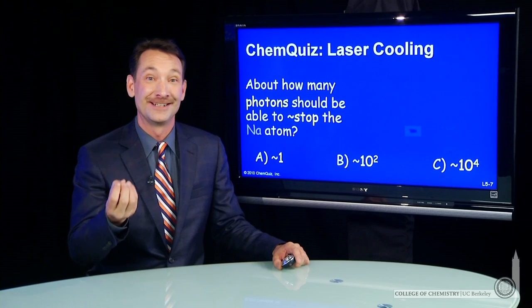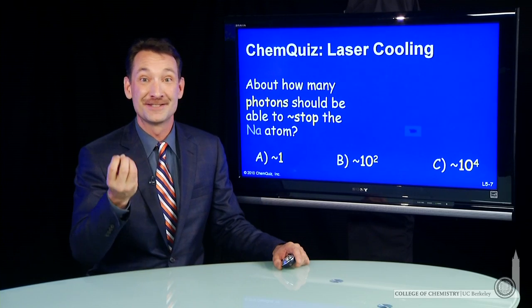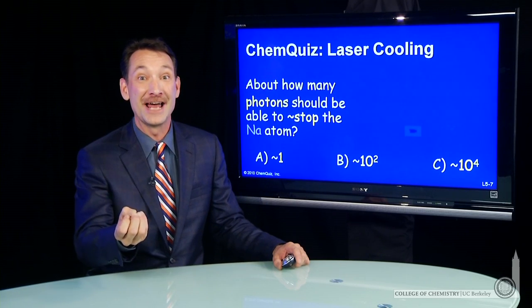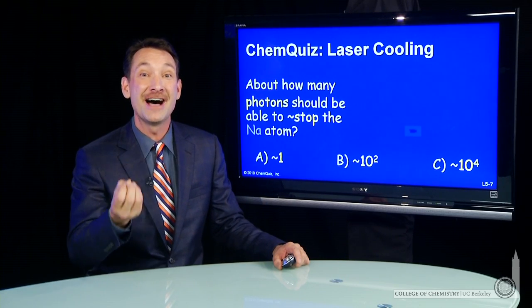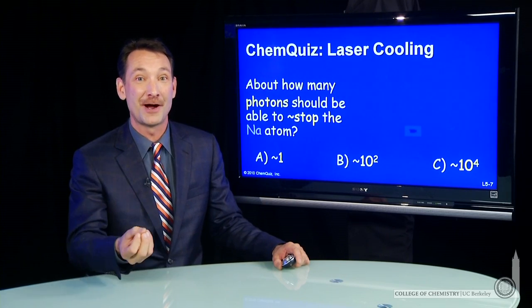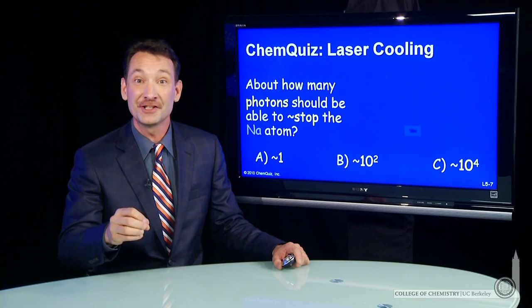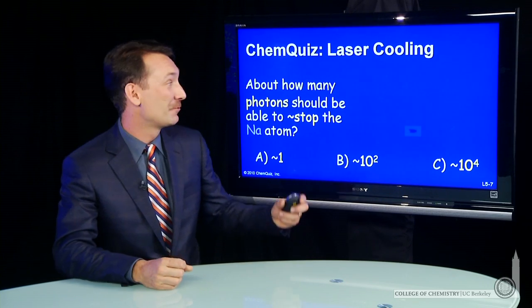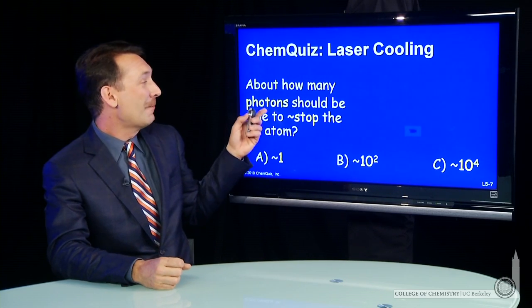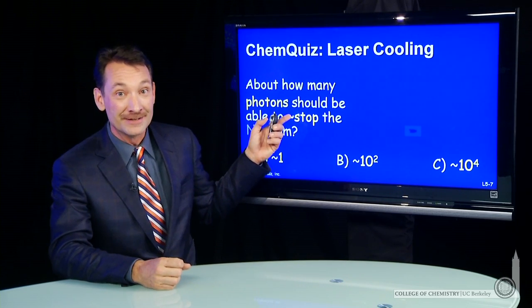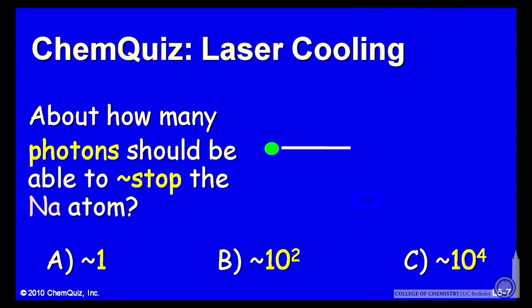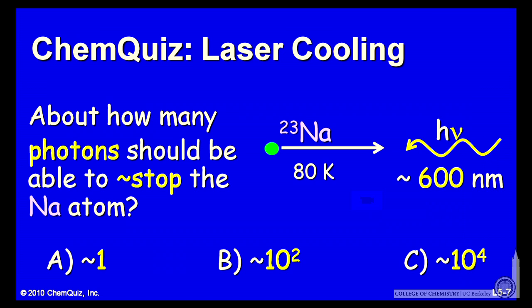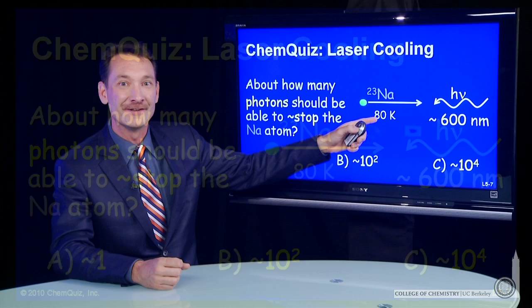Particles, electrons, small atoms have wave-like properties. Let's look at that in terms of a chem quiz. How many photons, behaving like particles, should about stop that sodium atom at 80 Kelvin?